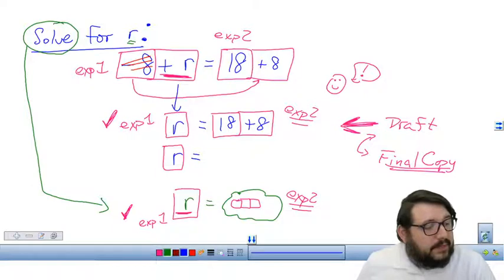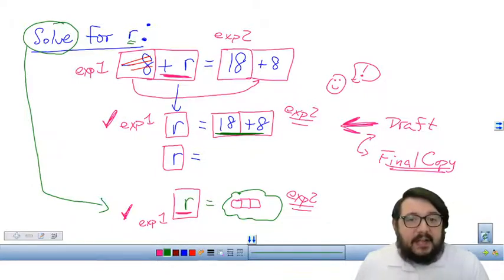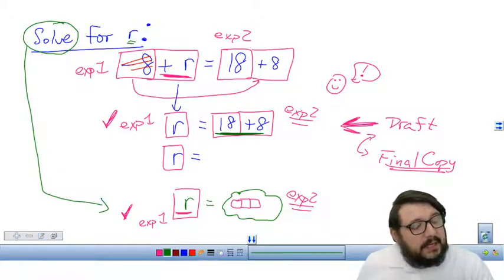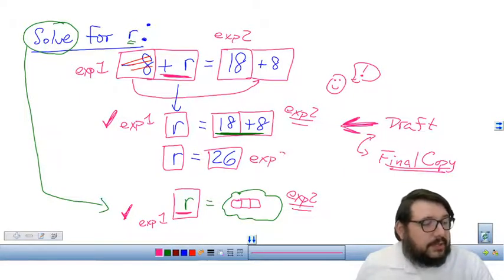What do I get with this expression right here, 18 plus eight? Well, these are both constant terms. So in algebra, we're allowed to combine constant terms. And so 18 plus eight is 26. So this is expression number two.